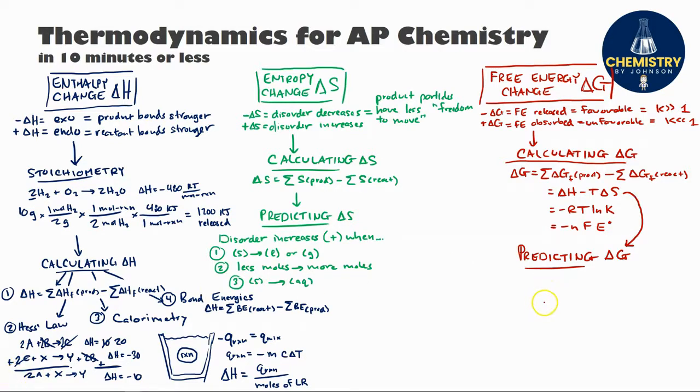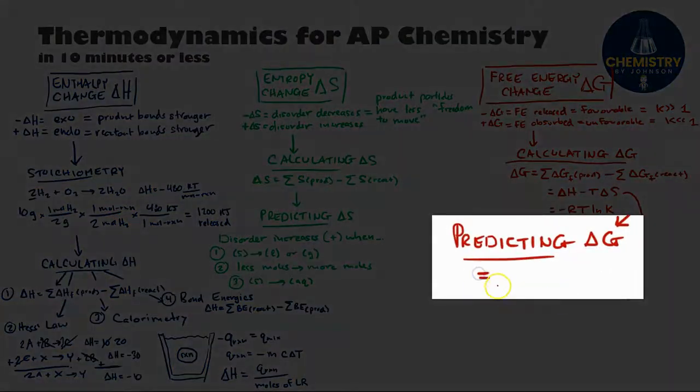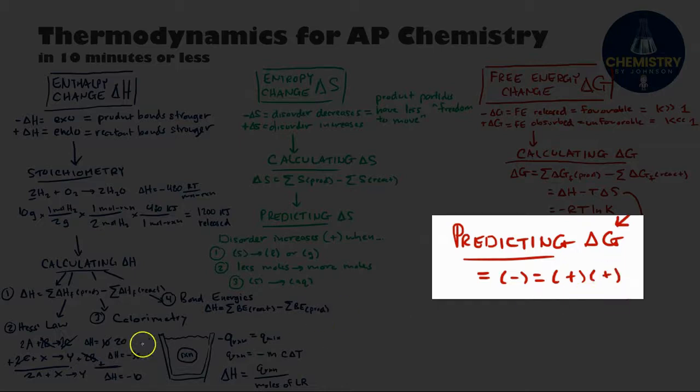So let's imagine a scenario where we have an exothermic reaction where the entropy increases. I'm going to plug in the sign conventions we'd expect there, negative for the delta H. Our temperature is going to be in Kelvin, which is always positive. So I can plug in positive there. And if entropy is increasing, then that's going to be positive as well.